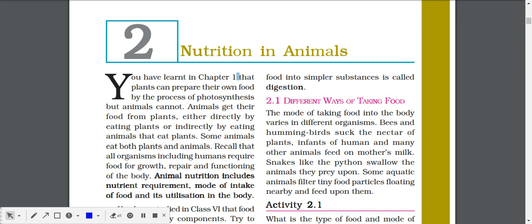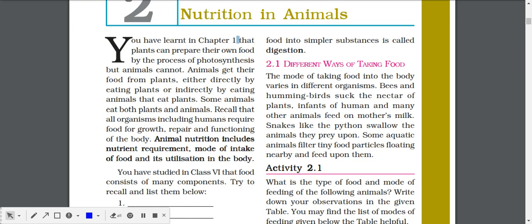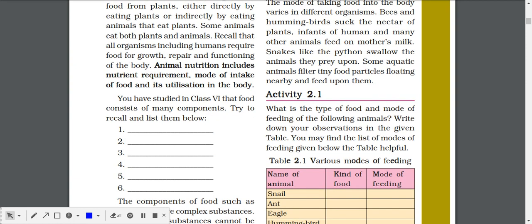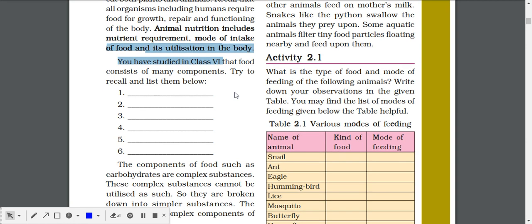Animal nutrition includes nutrient requirement, mode of intake of food, and its utilization in the body. This means what nutrients the body needs, for which processes, and how we take them and from where. There are many nutrients our body requires, and you have to write any six.